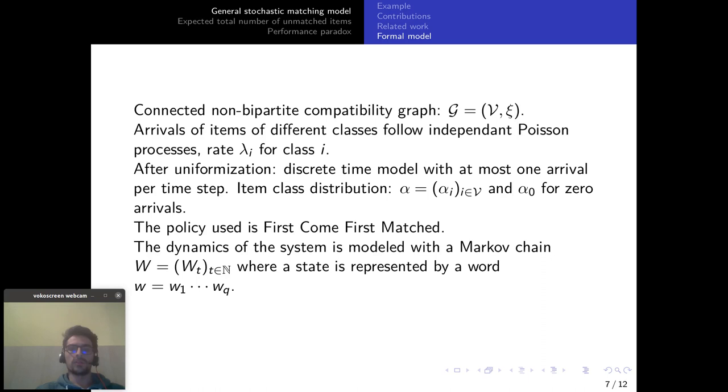We have arrivals of items of different classes following independent Poisson processes with rate lambda e. But after uniformization we can reduce it to a discrete time model with at most one arrival per time step and with item class distribution alpha.